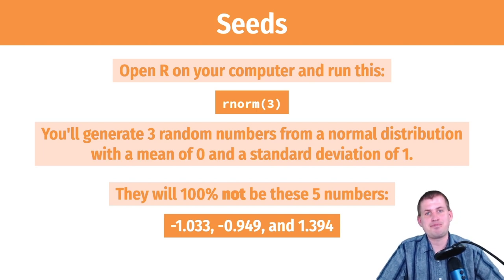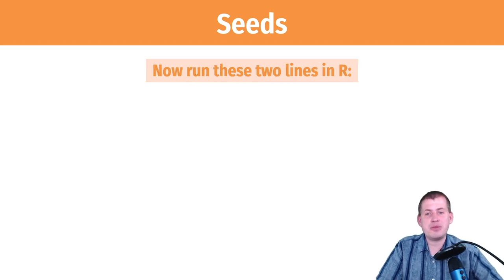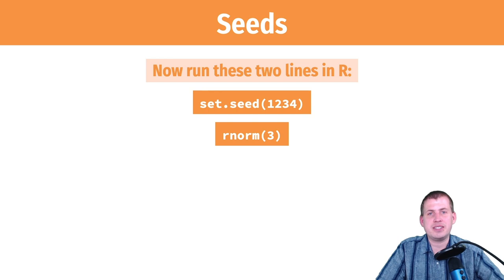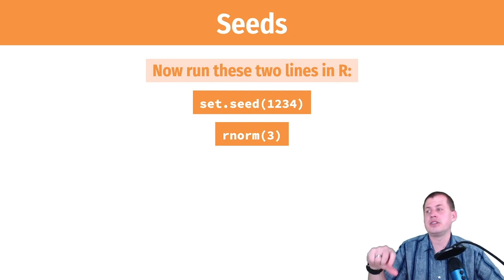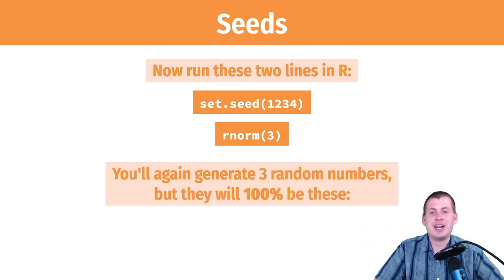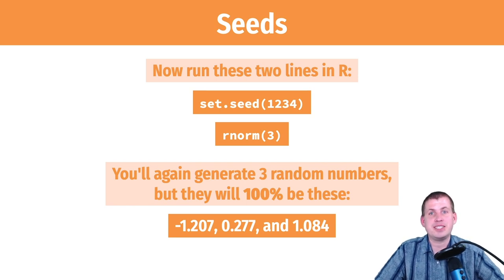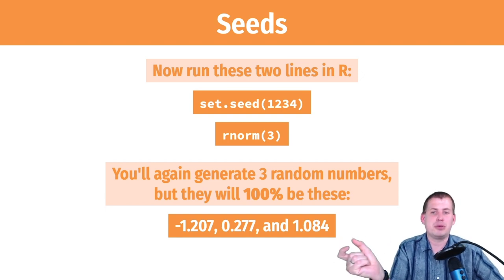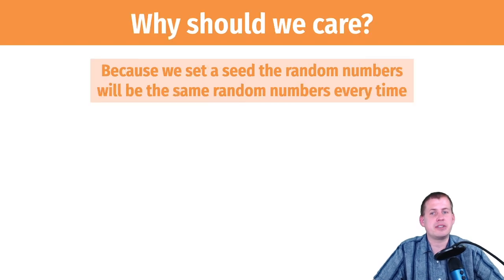Now run two lines of code: first set.seed(1234), then rnorm(3) to generate three random numbers from a normal distribution. I can 100% guarantee that if you're using the most recent version of R, you will generate the exact same numbers I have here. Even with completely different computers, different times, and different process IDs, you'll still get the exact same numbers.